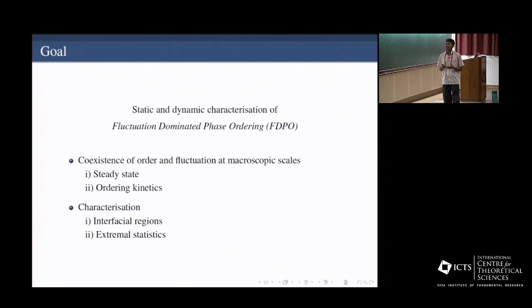So the question is, how does the steady state look like in this kind of phase? And also the ordering kinetics which says how does such kind of phase evolve in time? And to characterize this, we'll look at the interface and extreme values and we'll explicitly mention in the context of a model what does all this mean.